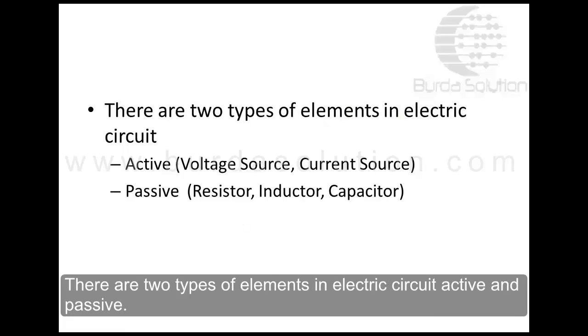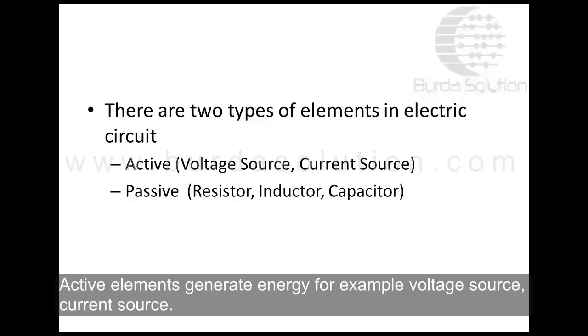There are two types of elements in electric circuits: active and passive. Active elements generate energy, for example voltage source and current source.